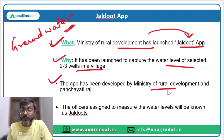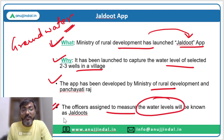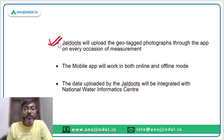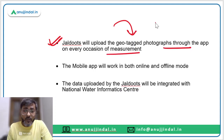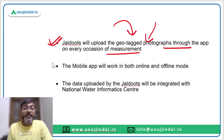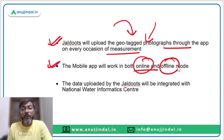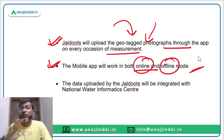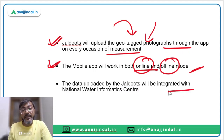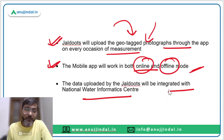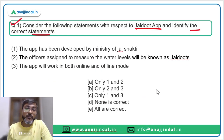This app has been developed by the joint efforts of the Ministry of Rural Development and Panchayati Raj. The officers assigned to measure water levels will be known as Jal Doots. These Jal Doots will have to upload geo-tagged photographs through the app on every occasion of measurement to prove that they have done their job. This mobile app will work in both online and offline mode, and the data uploaded will be integrated with the National Water Informatics Centre.